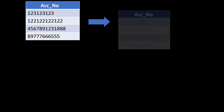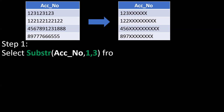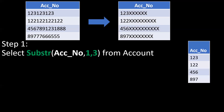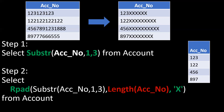In a similar way, if you want to display the first three digits of a particular account number, we use RPAD along with the LENGTH of the account number to mask the remaining characters with 'X'. The required output can be achieved.